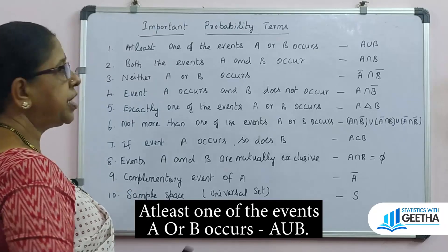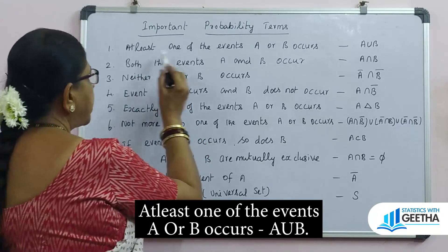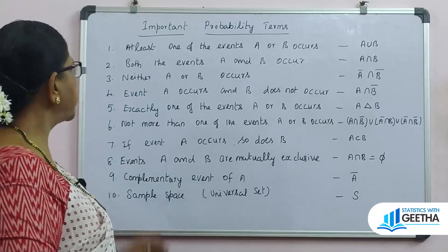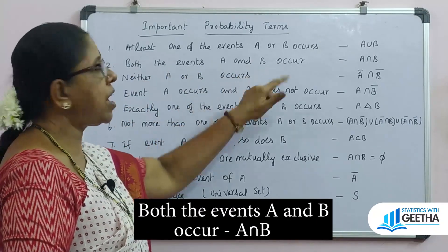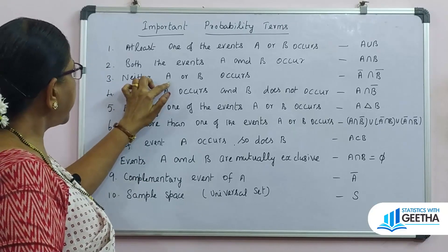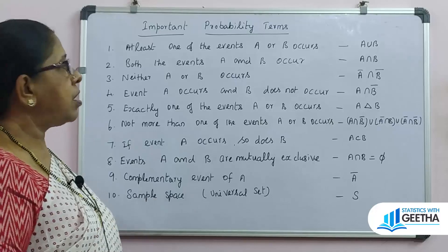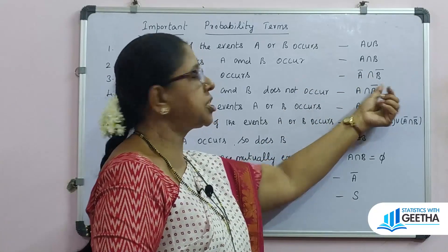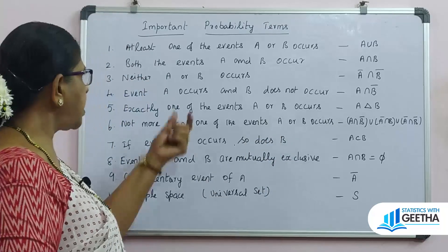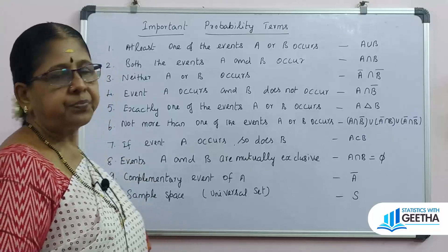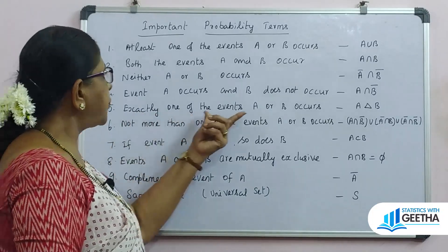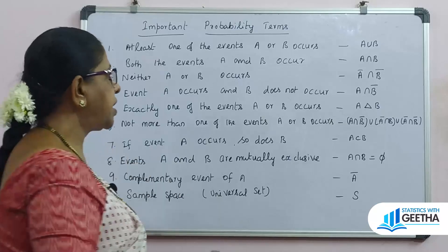At least one of the events A, B, or C occurs. At least one of the events A and B occur. Neither A nor B occurs — this corresponds to 'either or.' At least one of the events A or B occurs — this uses the union operation.